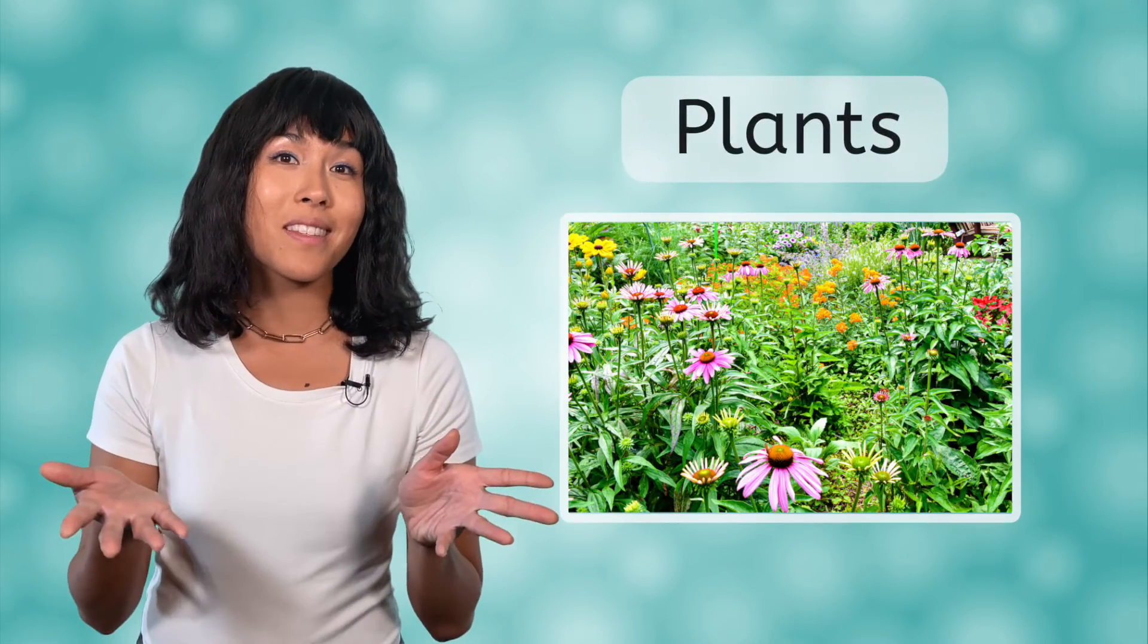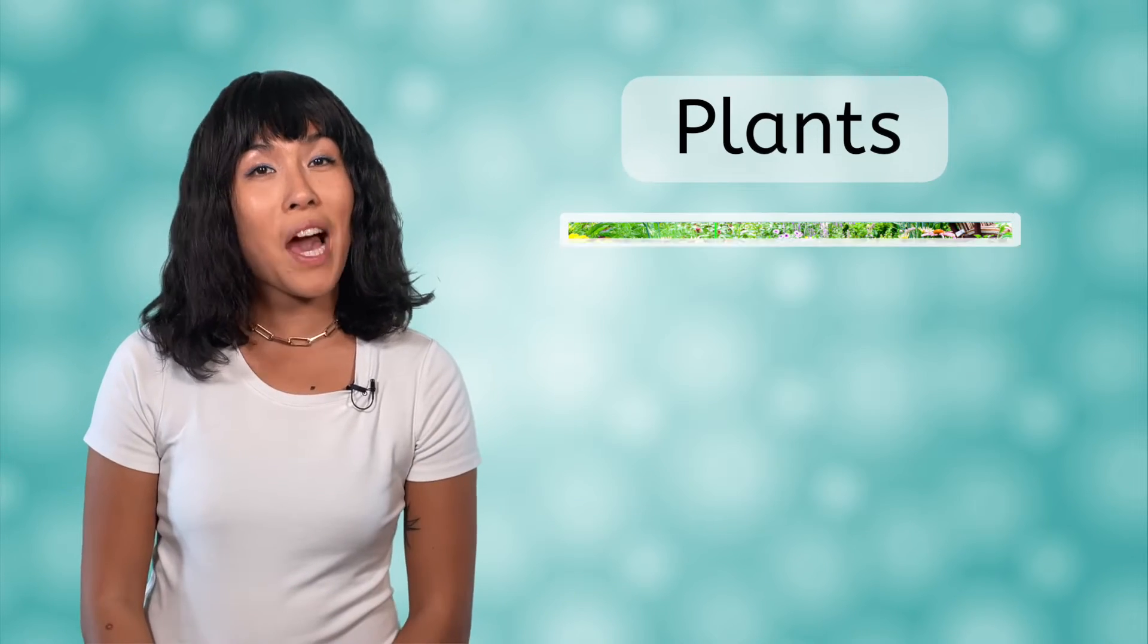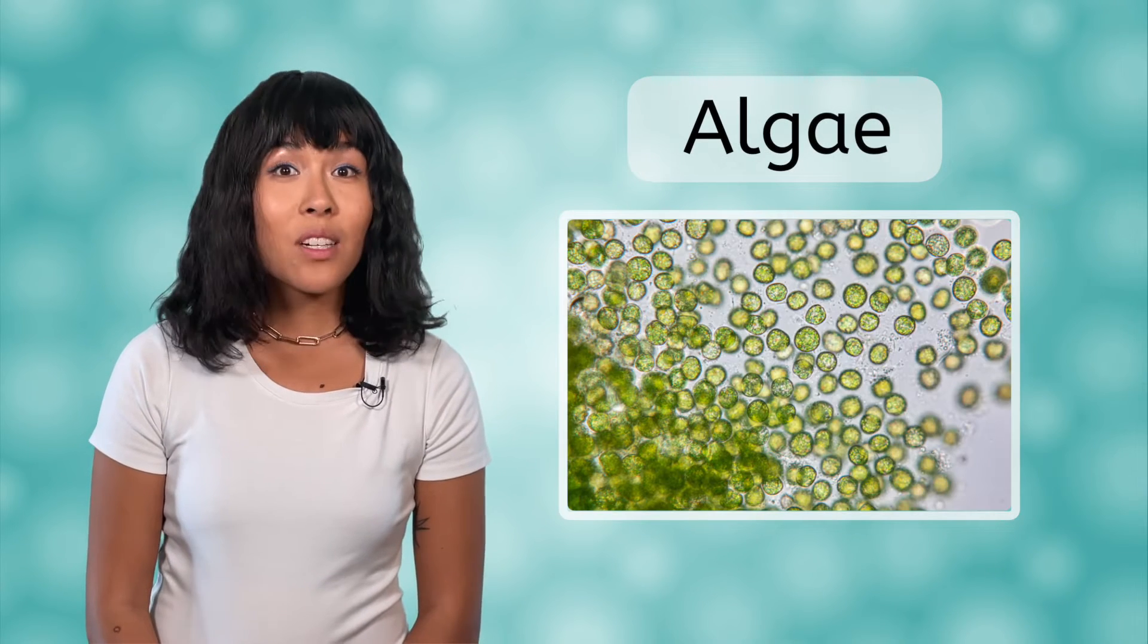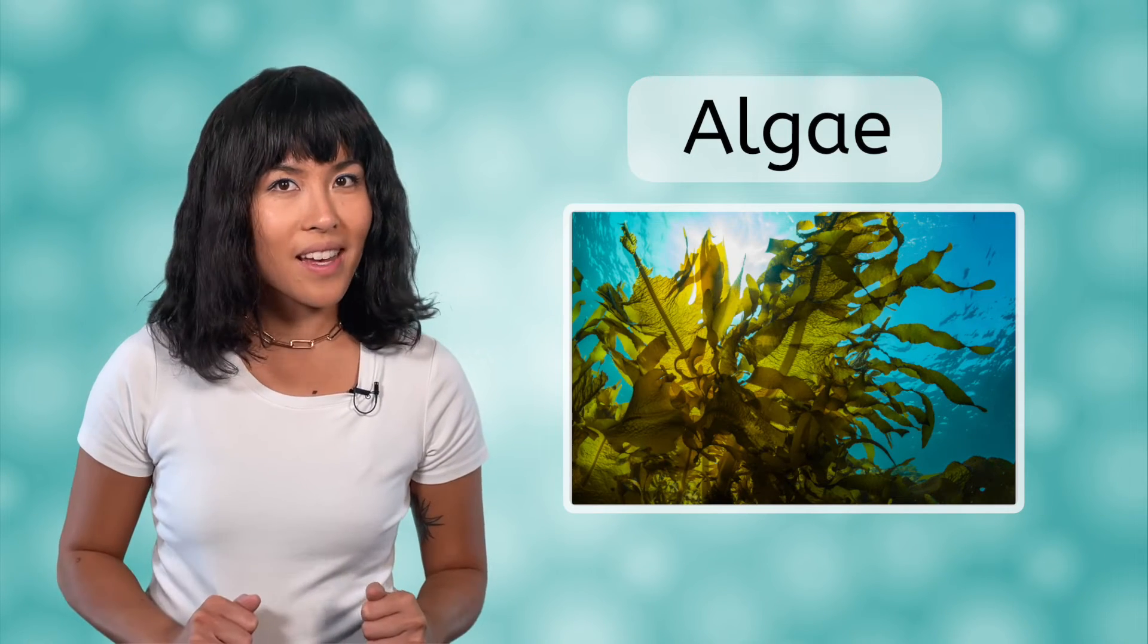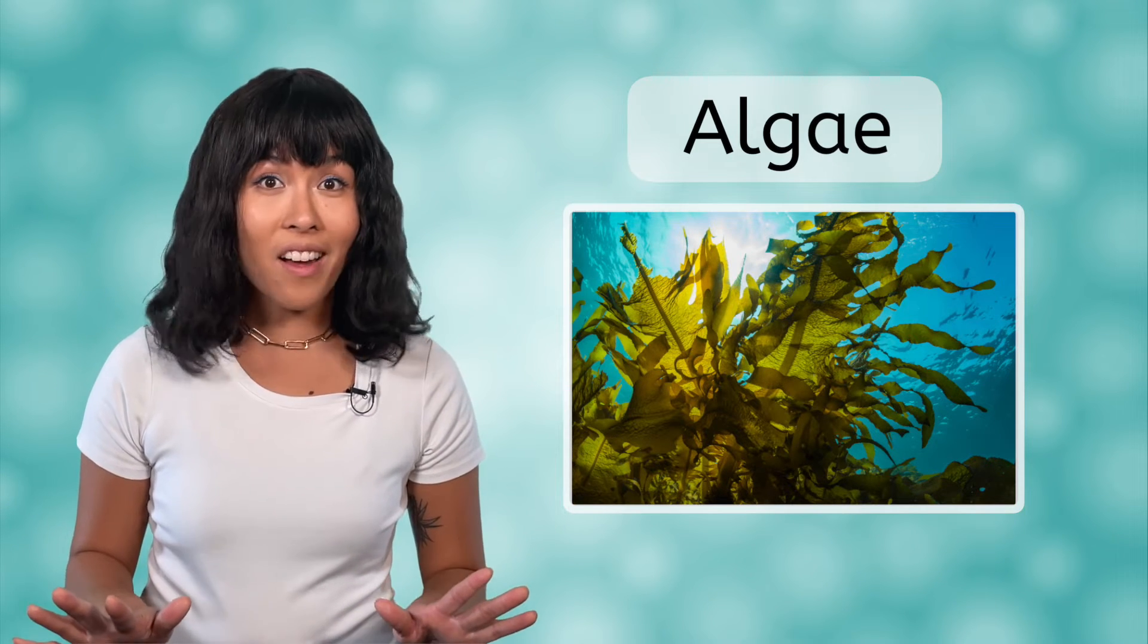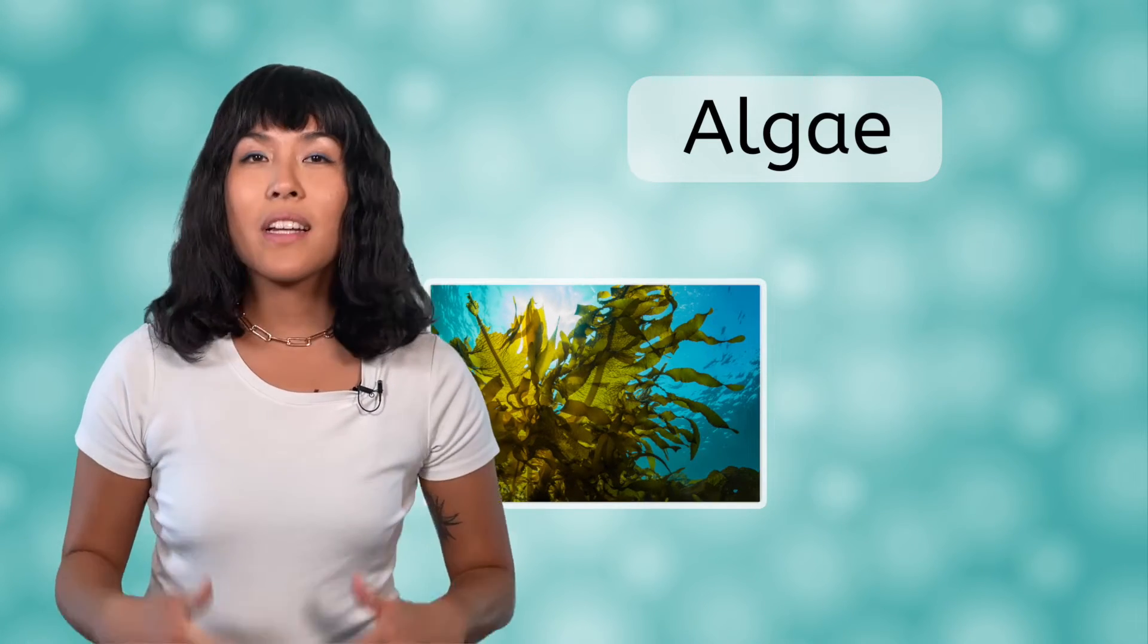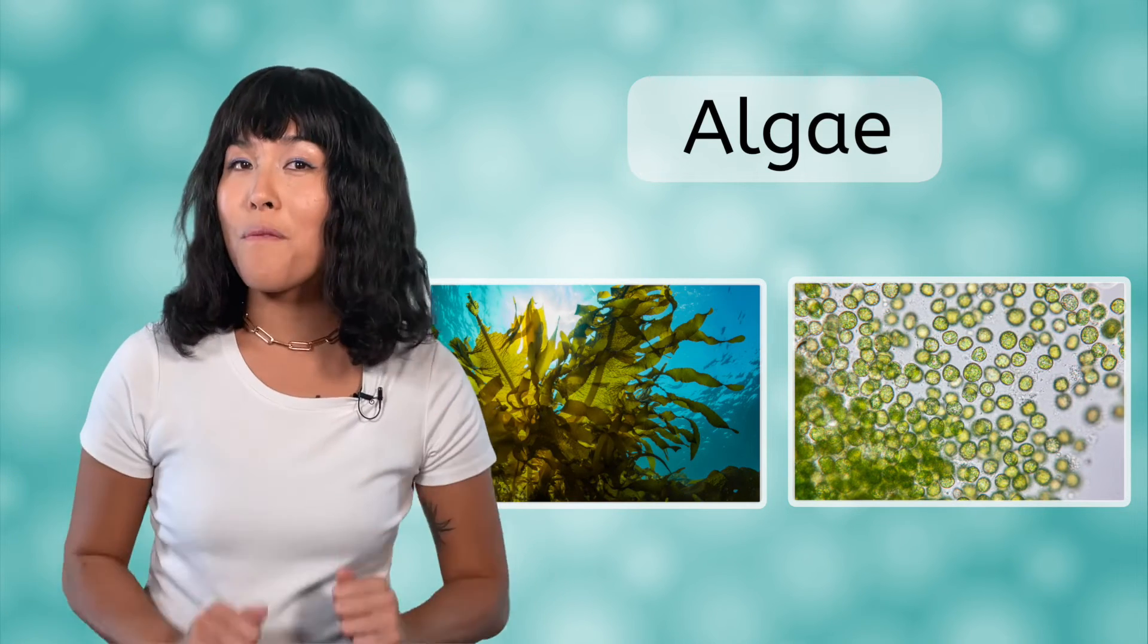We've already discussed that photosynthesis occurs in plants, but they are not alone. Two other categories of organisms perform photosynthesis as well. The first is algae. Some algae are single-celled and microscopic. Other algae are multicellular and visible to the naked eye. These macroscopic algae are often called seaweeds. Though seaweeds may look like plants, they are not. Plants and algae have many structural differences that set them apart. But like plants, both microscopic and macroscopic algae do perform photosynthesis.